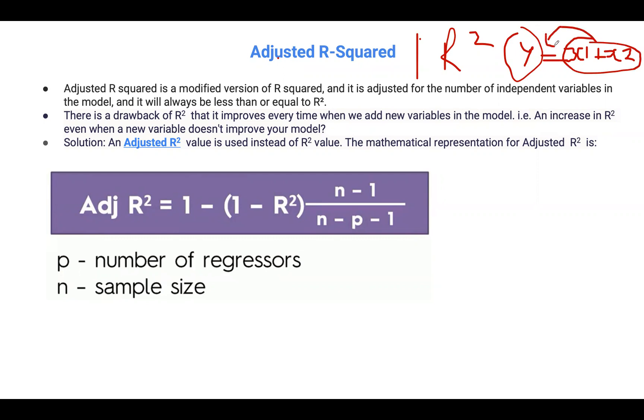With adjusted R-squared, it measures the variance explained by only the independent variables. So independent variables here will be our x1, x2, x3. This adjusted R-squared just takes into account only the independent variables.